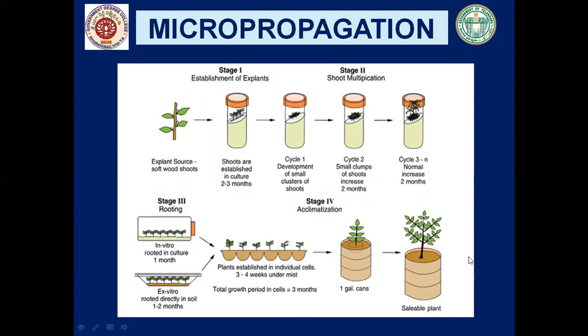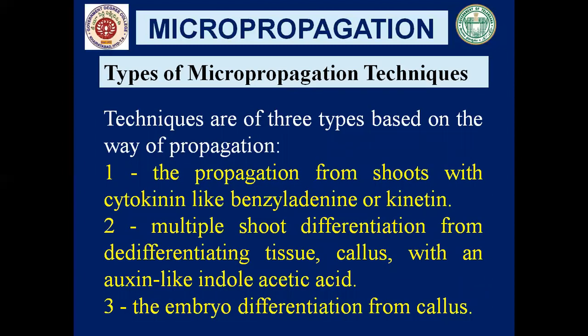Now we'll see what are the types of micropropagation techniques. There are three types based on the way propagation is done. The first is propagation from shoots with cytokinin like benzyl adenine or kinetin. The second is multiple shoot differentiation from de-differentiating tissue or callus using auxin like indole acetic acid (IAA). The third is embryo differentiation from callus.